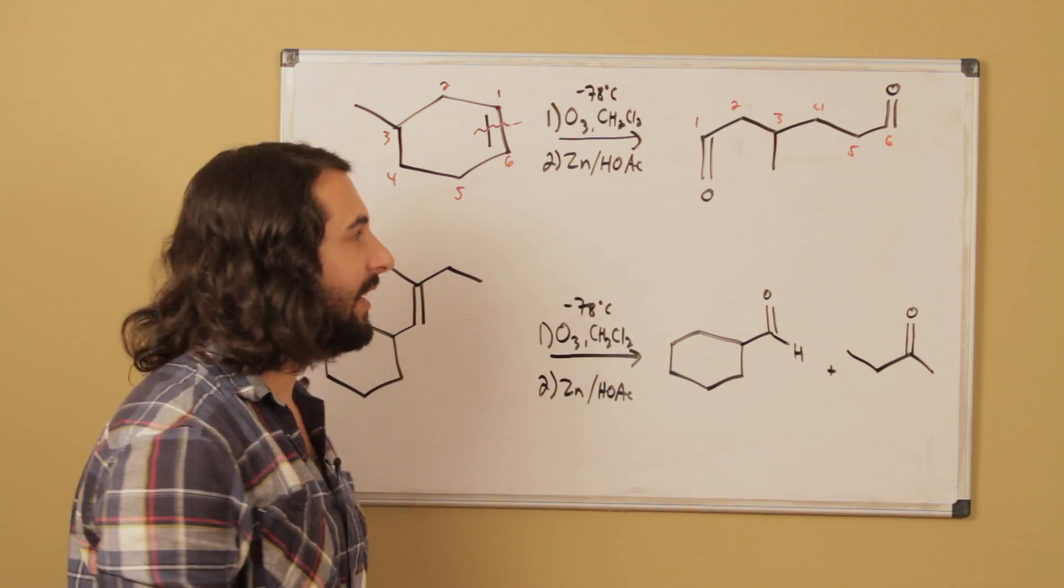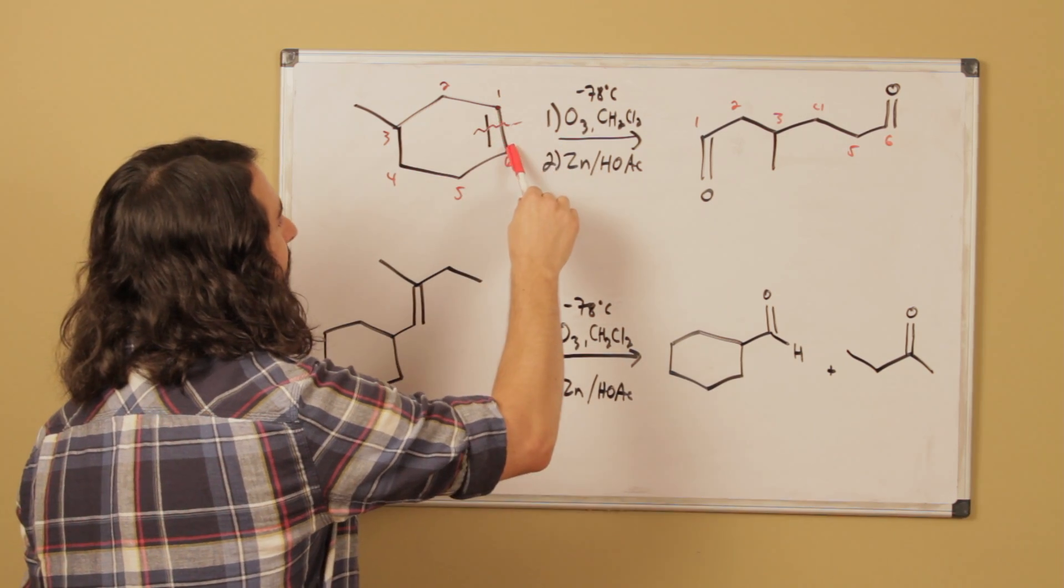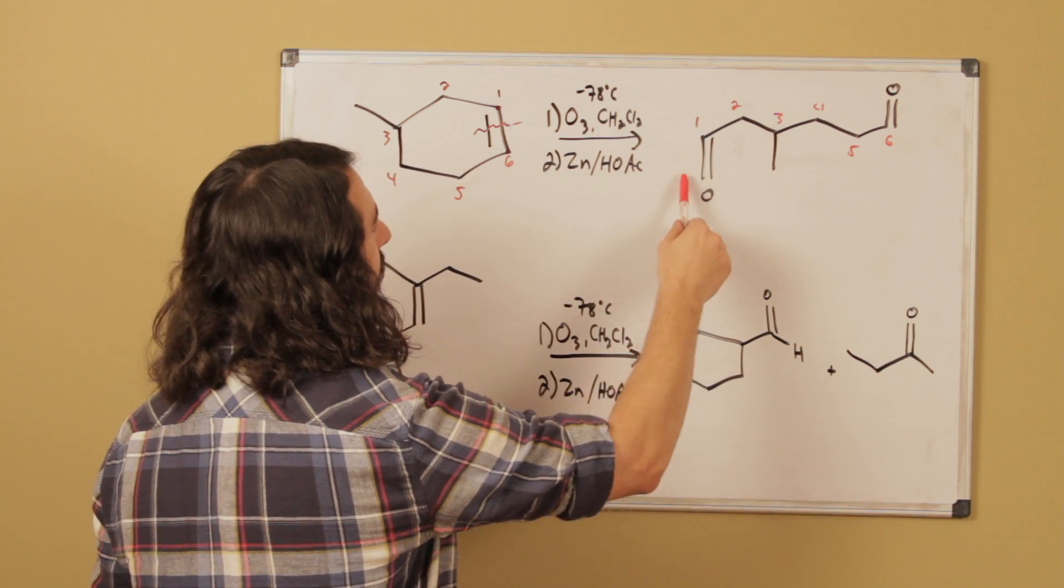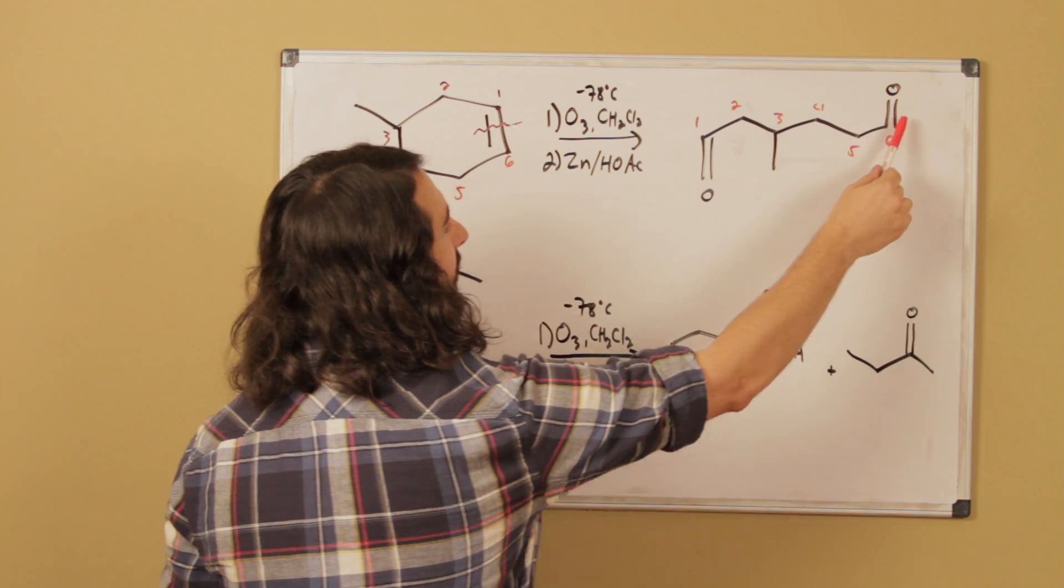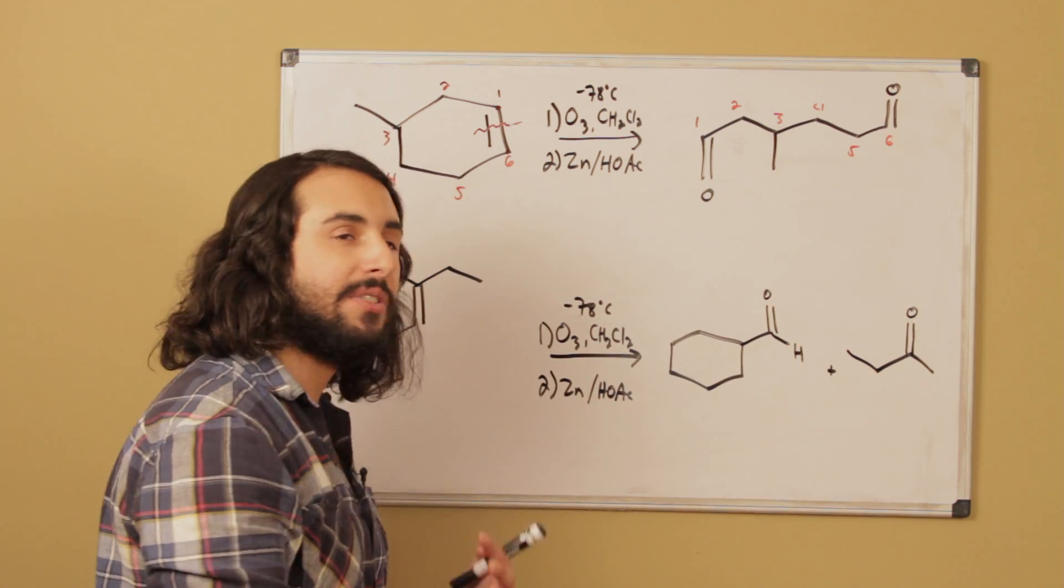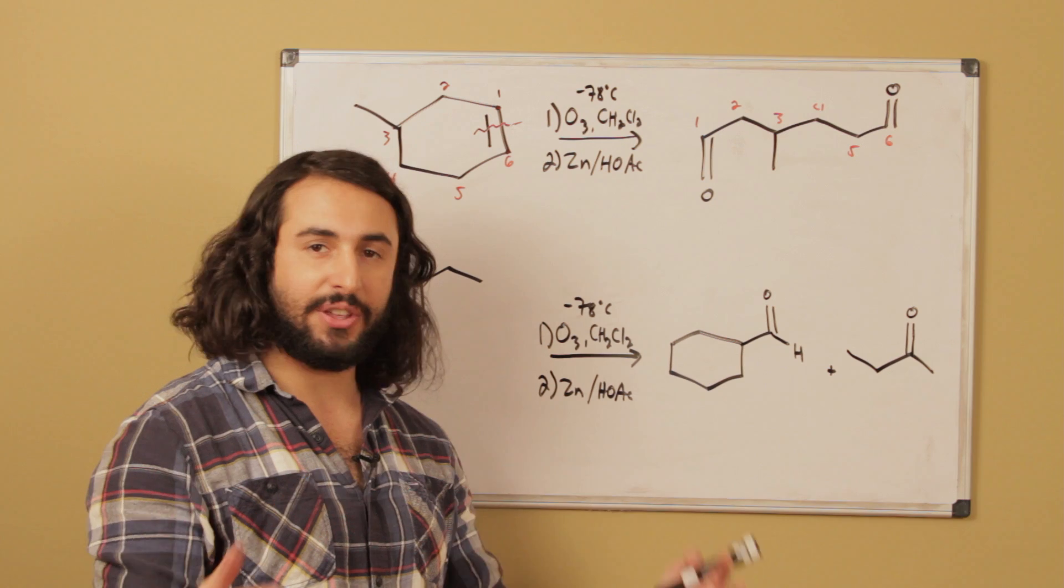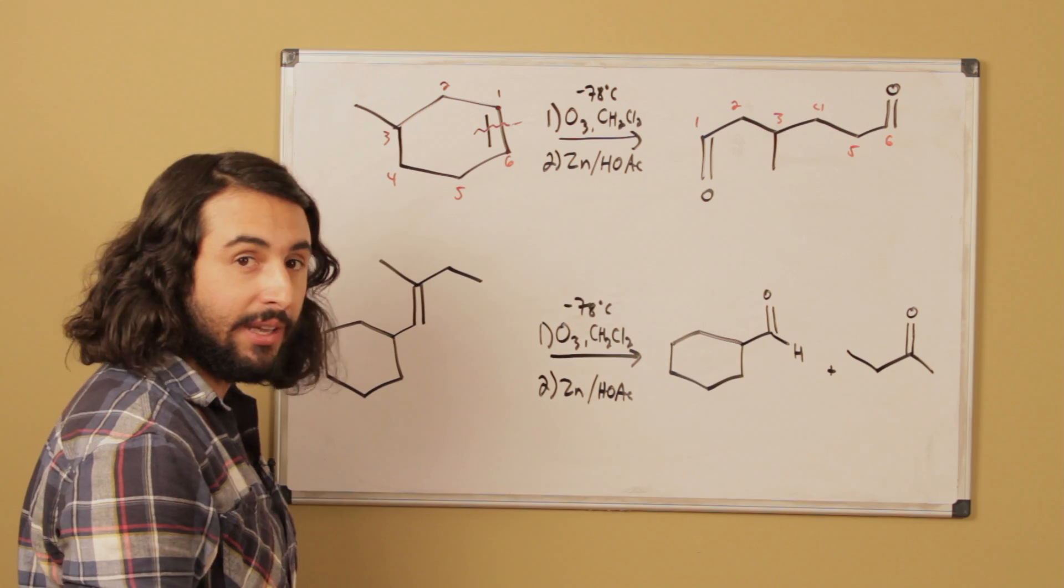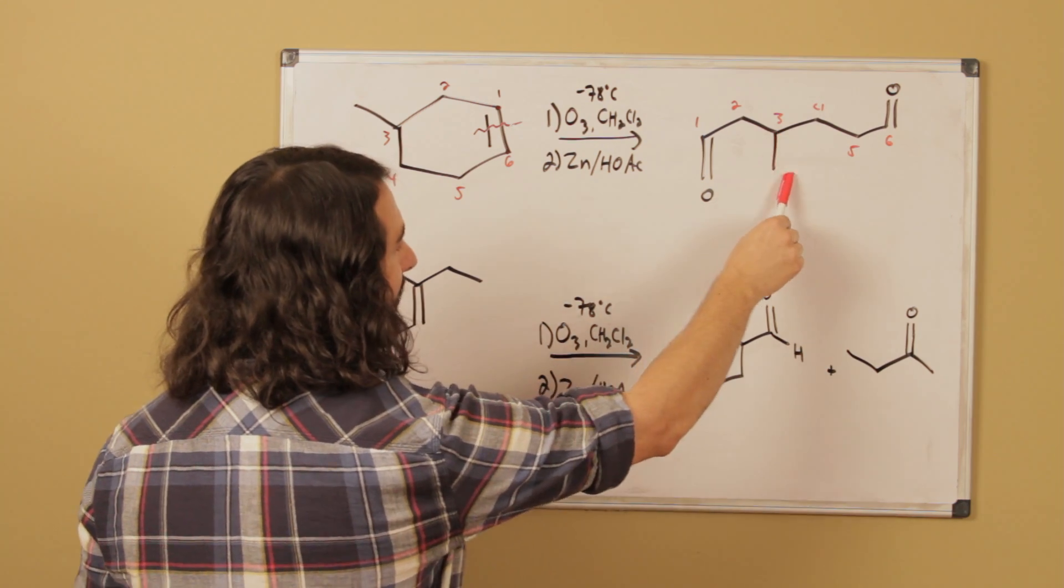Now recall what we said: the carbons that were participating in the double bond now are carbonyl carbons. So carbon 1 we've drawn a carbonyl, carbon 6 we've drawn a carbonyl. And then if there's anything else on the molecule, nothing has changed so that needs to be drawn where it was. As it happens there was a methyl on carbon 3, so that methyl on carbon 3 is still going to be there.